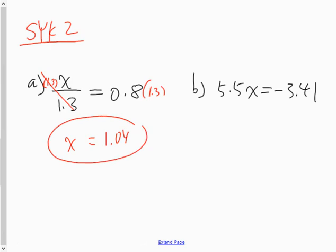In the next one you have a coefficient of 5.5x. So I'm going to divide both sides by the coefficient to get rid of it. I'm going to divide both sides by 5.5.